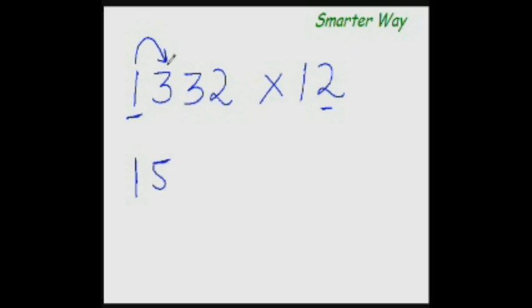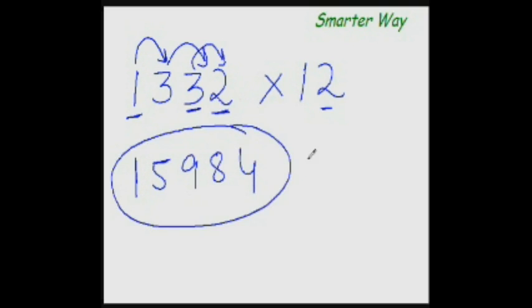Now double of 3 is 6, and 6 plus 3 is 9. Now double of this 3 is again 6, and 6 plus 2 is 8. And double of this 2 is 4. So this is your answer.